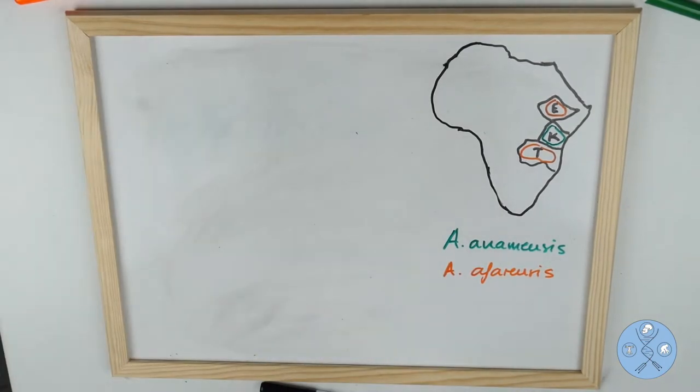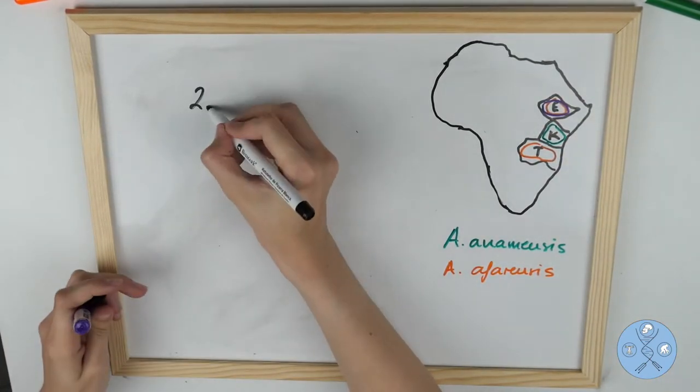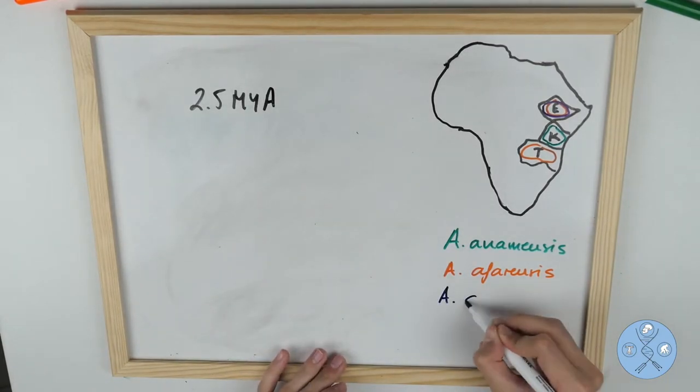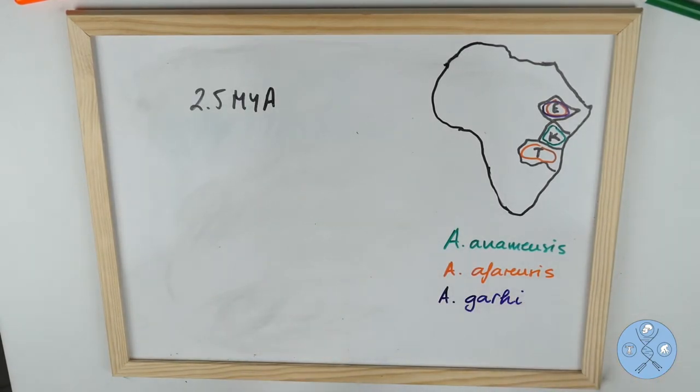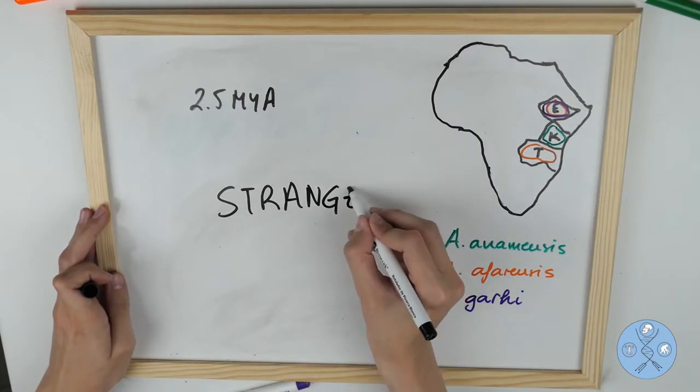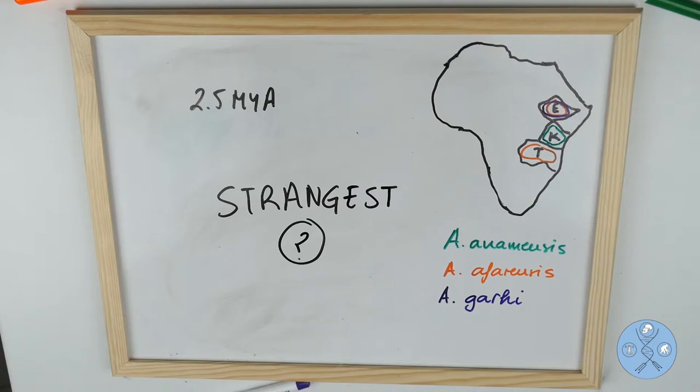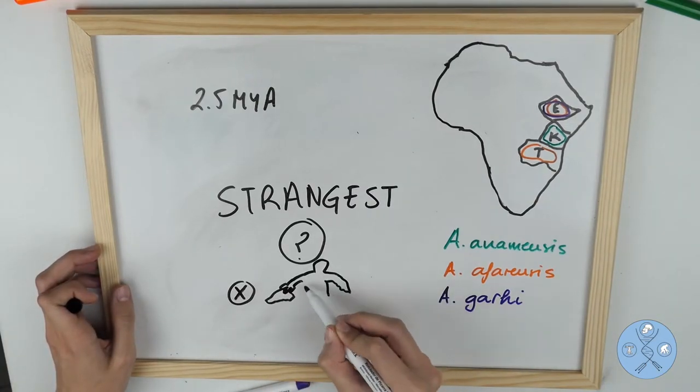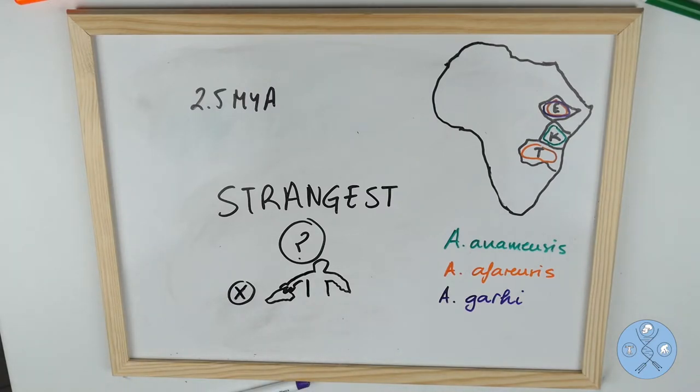The third archaic hominin was found in Ethiopia and dated around 2.5 million years ago. It was called Australopithecus garhi and was the strangest of all. Its slim bones suggested it was a biped, but its chewing teeth are much larger than the other hominins. They found no stone tools with garhi fossils, but they found evidence that by that time, hominins defleshed animals.